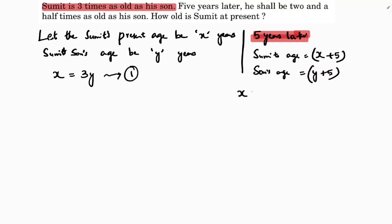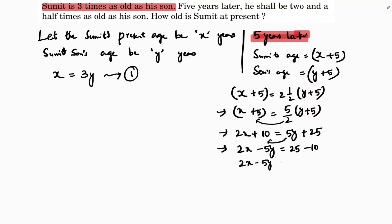So Sumit is two and a half times as old as his son. X plus five equals two and a half times Y plus five, which is five by two times Y plus five. Cross multiply: two X plus ten equals 5Y plus 25. So two X minus five Y equals 25 minus 10. Two X minus five Y is 15. This is equation two.